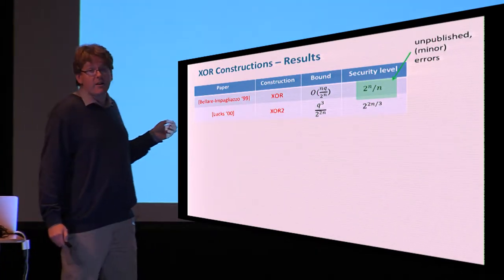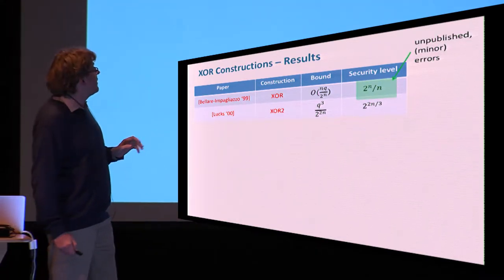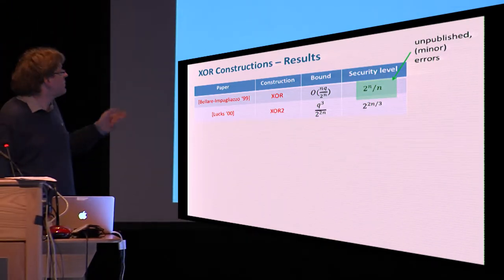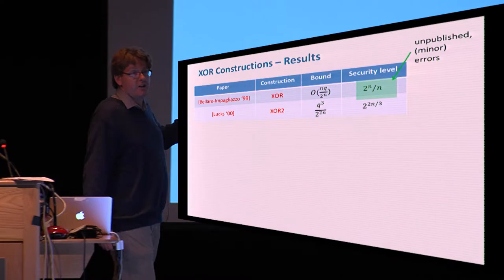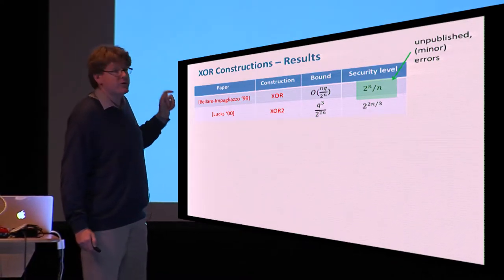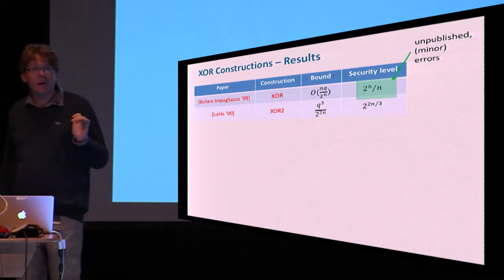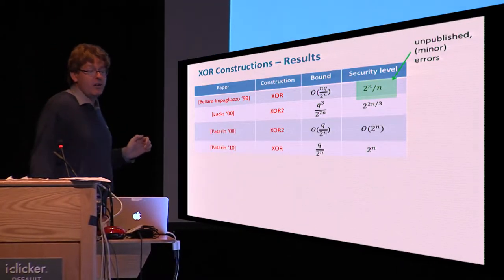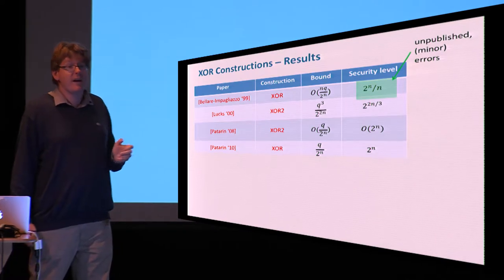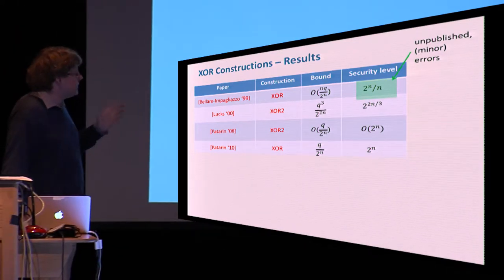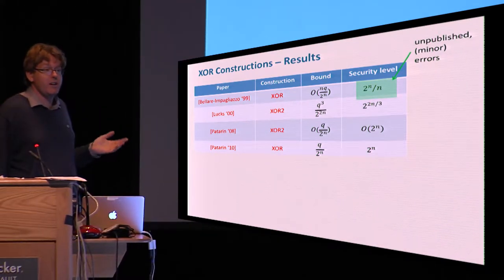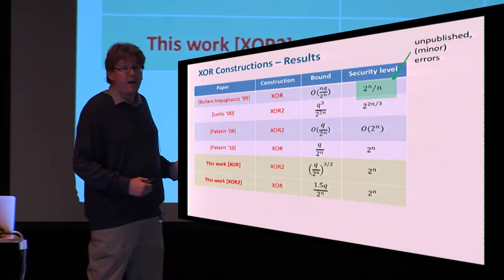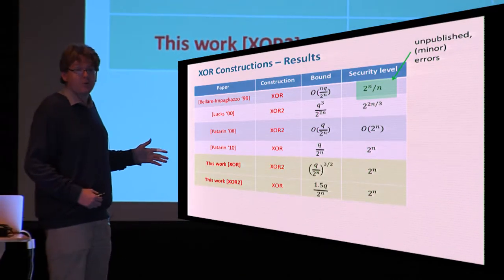Unfortunately, this paper has some minor errors that by now we know how to fix but remain unpublished. Lucks, one year later, published actually a bound which is inferior for the two-key version of the construction and only guarantees security up to 2^(N/3) queries. It was until 2008 and 2010 that Patarin published two analyses of the two variants of the construction which essentially give optimal security or near optimal security.